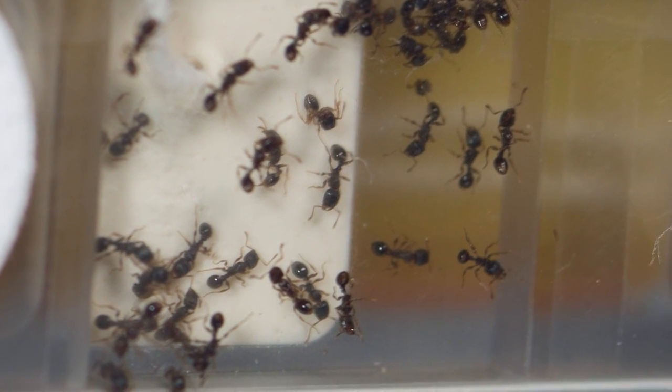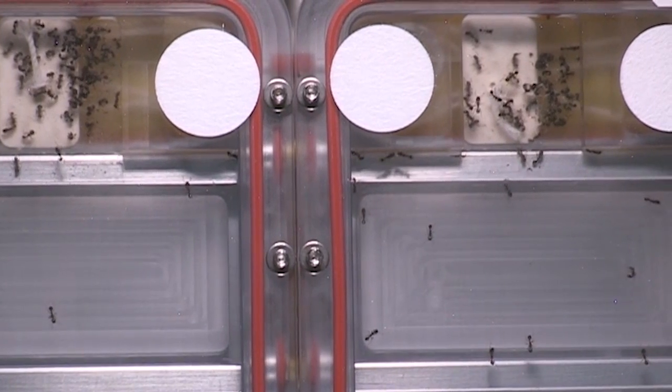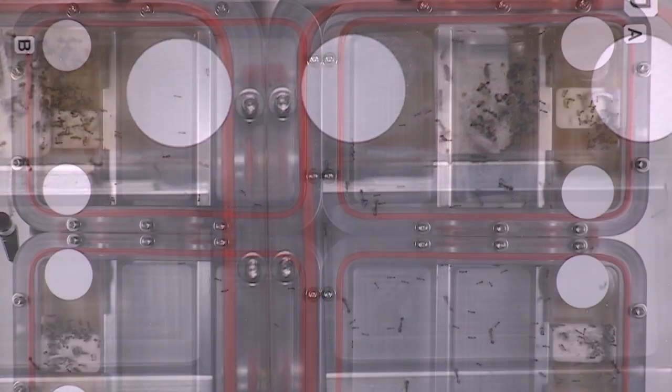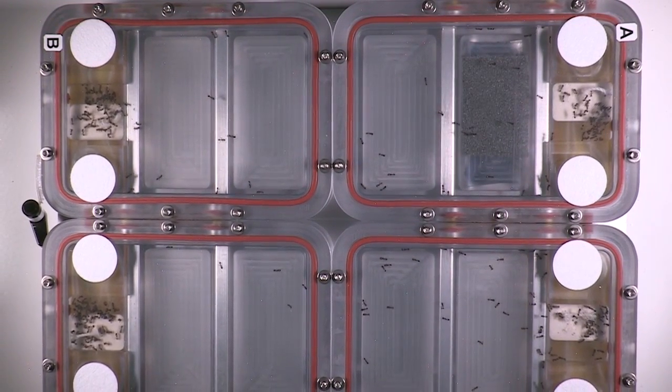Such as looking at how ants behave in space. What we're interested in with the ants is looking at how their movement behavior changes in different patterns in a microgravity environment. We don't know how they're going to behave. We've never looked at this before. And it's actually going to be performed on orbit.